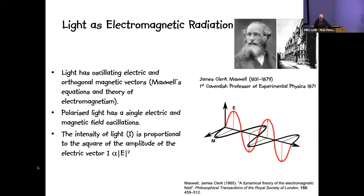James Clerk Maxwell was the person that Einstein referred to when saying that he was standing on the shoulders of giants. Maxwell's equations showed that light can be described as an oscillating electric wave with an orthogonal magnetic vector. Here we've shown polarized light — a single electric vector with magnetic oscillations — and the intensity of light is proportional to the square of the amplitude of this electric vector.